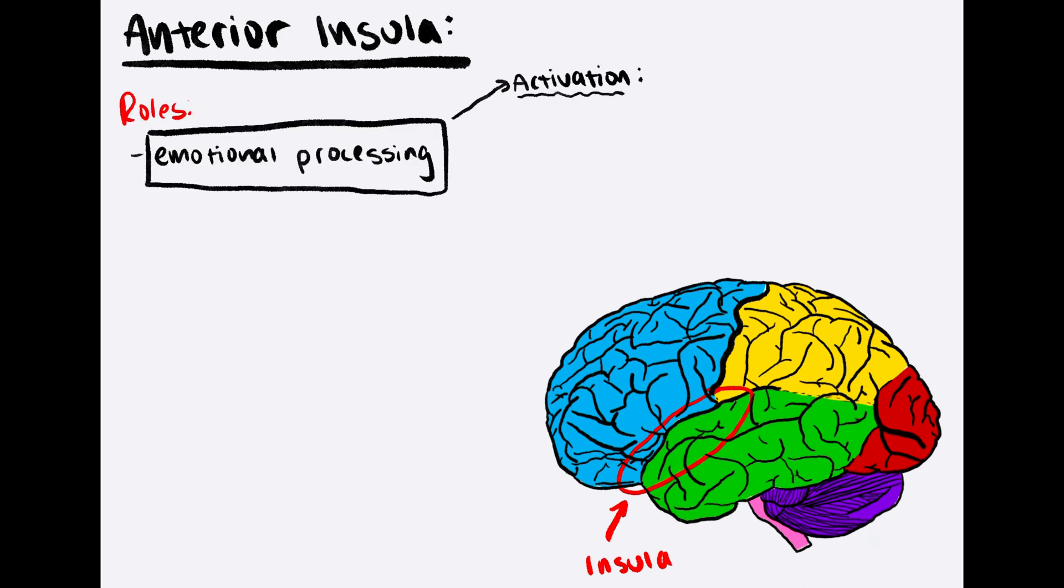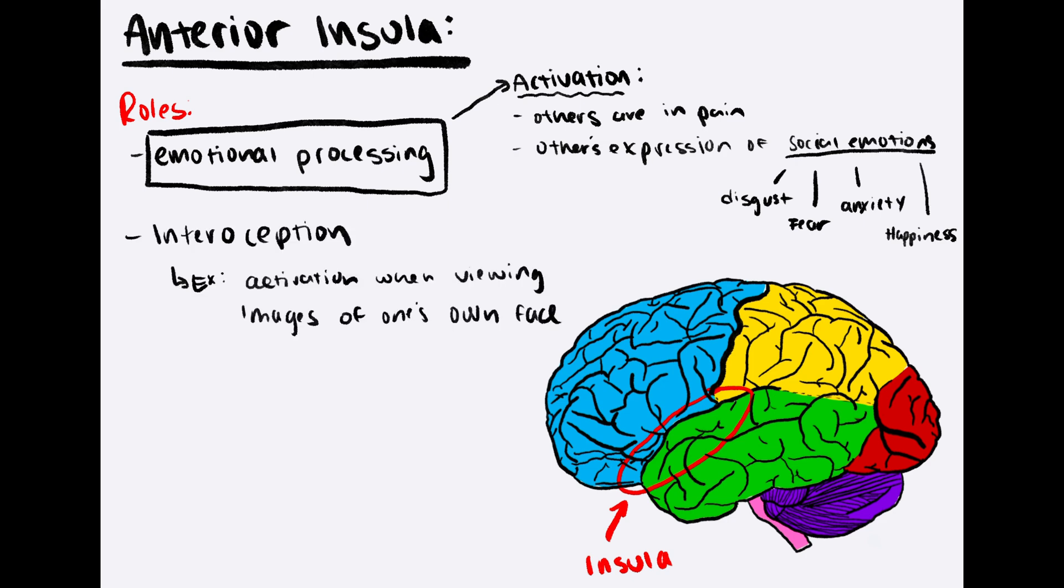The anterior insula has a prominent role in emotional processing. We see activation in this area when others are in pain, as well as activation in response to others' expressions of social emotions such as disgust, fear, anxiety, and happiness. The anterior insula is also highly involved in interoception. For example, we see activation in this area when viewing images of one's own face.